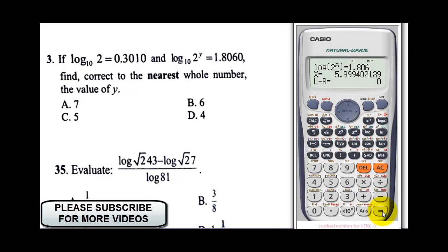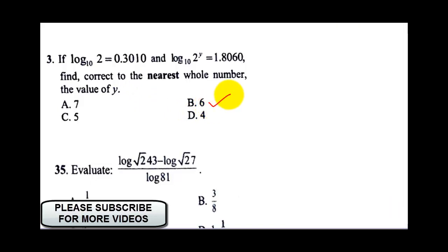And what did the question say you should do? Find correct to the nearest whole number. Now to the nearest whole number, approximating this, our final answer, it's going to be 6. So here, I'm going to mark 6.